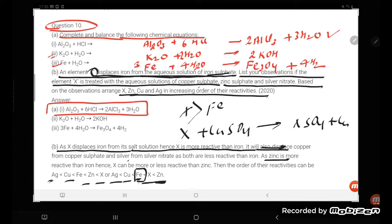So they are saying as X displaces iron from its salt solution, hence X is more reactive than iron. It will also displace copper from copper sulfate and silver from silver nitrate, as both are less reactive than iron. As zinc is more reactive than iron, hence X can be more or less reactive than zinc.